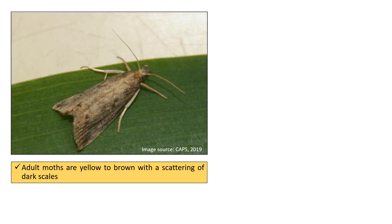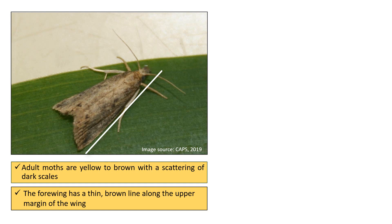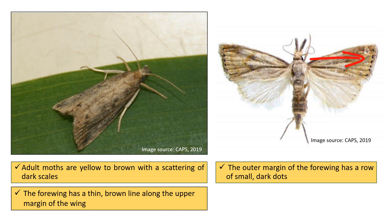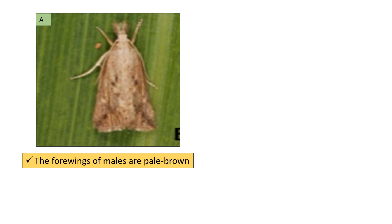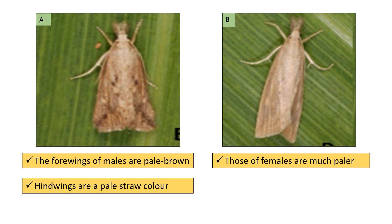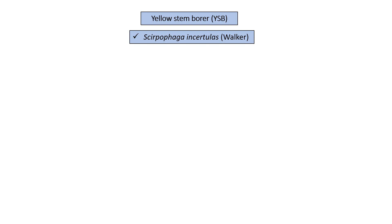After 7 to 14 days, adults emerge from pupae and come out of the stem. Adult moths are yellow to brown with a scattering of dark scales. The forewing has a thin brown line along the upper margin and a row of small dark dots along the outer margin. Hind wings are white to gray. In males, the forewings are pale brown and hind wings are a pale straw color, whereas in females, the forewings are much paler and hind wings are white.